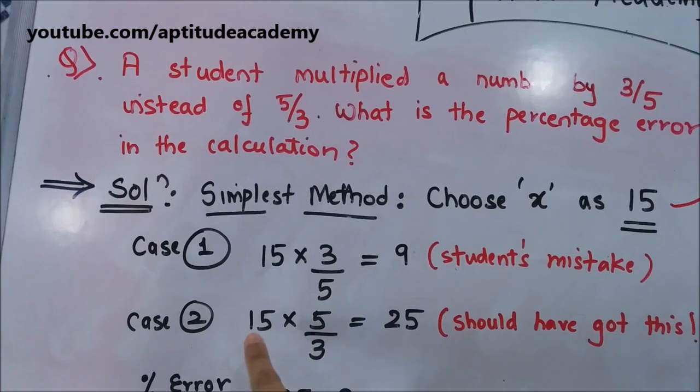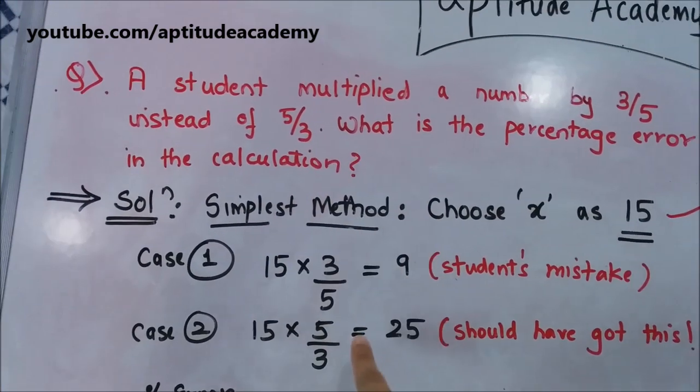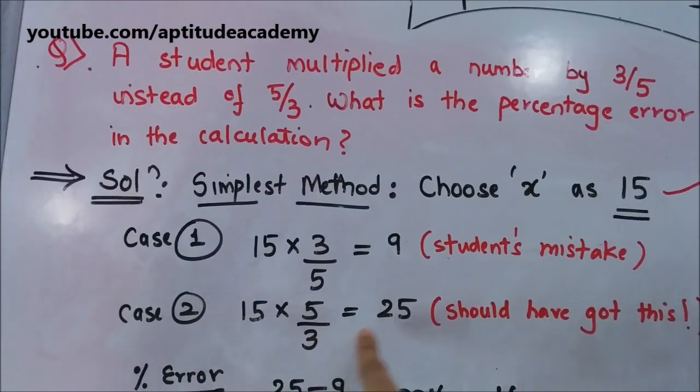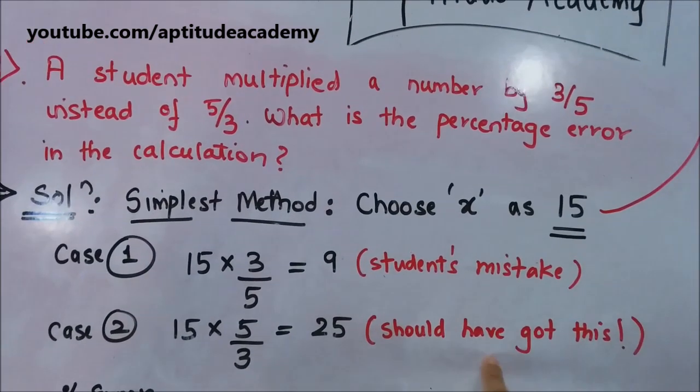Case 2: what he should have done. He should have multiplied 15 by 5/3. If you multiply 15 × 5/3, you get 25. The student should have gotten this.